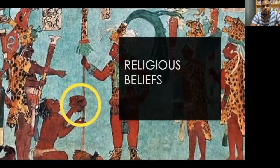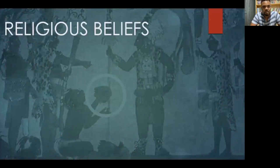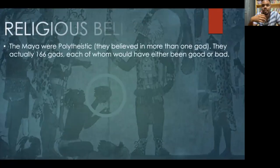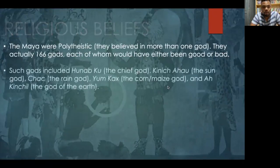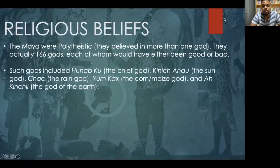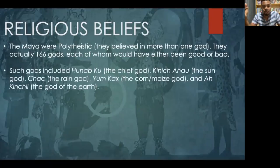Looking at the religious beliefs of the Mayan civilization: the Mayans were a polytheistic people, meaning they believed in more than one god. In fact, they had over 166 gods, each of whom was either good or bad. Such gods include the Hunabku, who was seen as the chief god; the Kinich Ahau, the sun god; Chaac, the rain god; Yum Kaax, the corn or maize god; and Akinchil, the god of the earth.